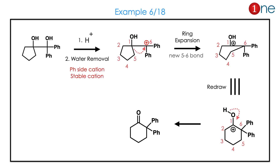Let us look at the next question. You have a phenyl and a ring system. Where will the cation be formed? The cation is obviously formed near the phenyl due to higher stability. Ring expansion happens and ring strain is relieved. The 5-membered ring becomes a 6-membered ring, and a ketone forms.